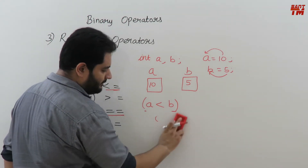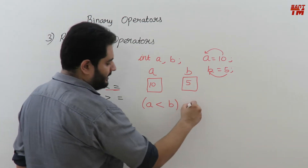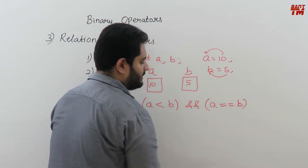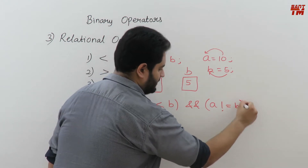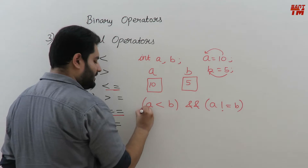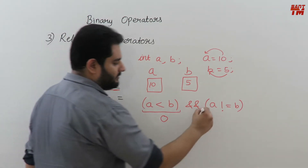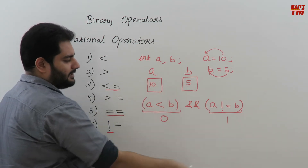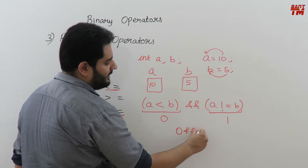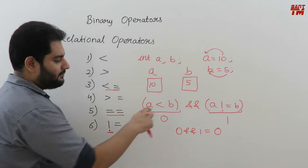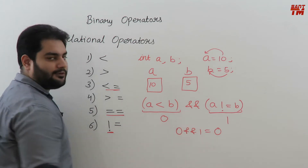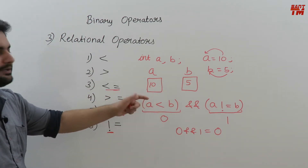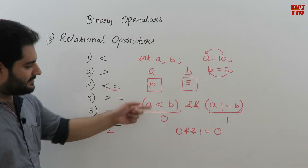Now combining relational and logical operators: if I write (a < b) && (a != b), the first part returns 0 because a is greater than b, and the second part returns 1 because a is not equal to b. The overall result is 0 AND 1, which equals 0 — false. Because AND requires both values to be true, and here one is false, the result is false. This is how relational and logical operators can be mixed in an expression.